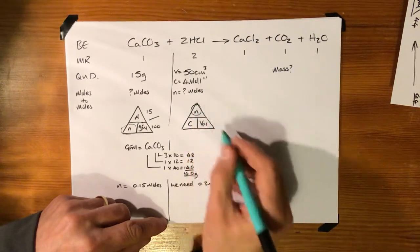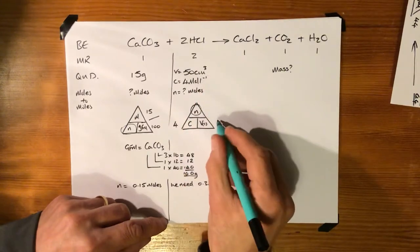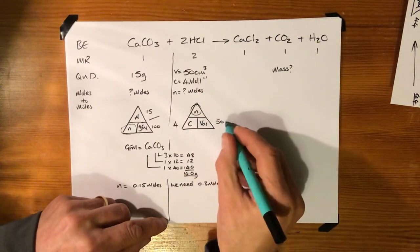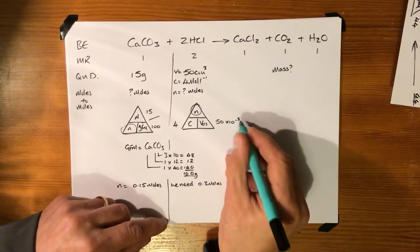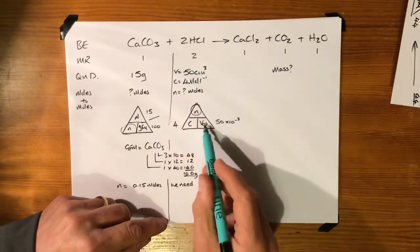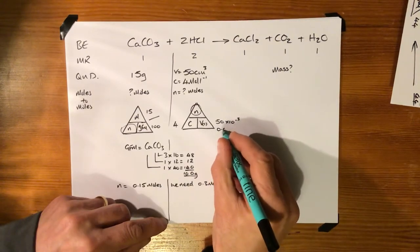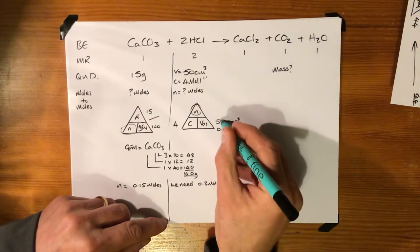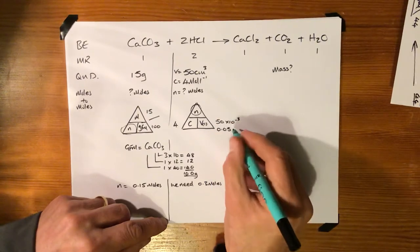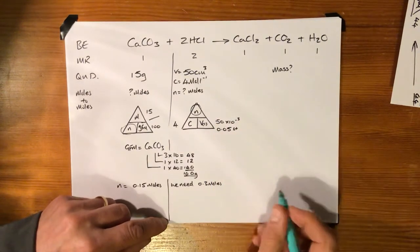Right, so we're trying to work out number of moles, so it's the concentration which is four times the volume which is 50 times 10 to the negative three, because we're given this in centimeter cubed but we need to do it in liters. Right, so in actual fact it's 0.05 liters. Okay, so four times 0.05 is...